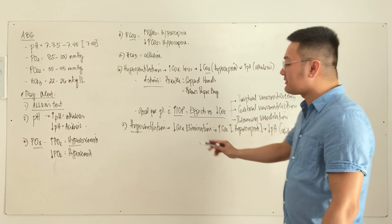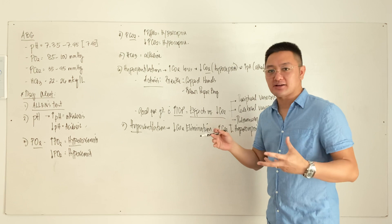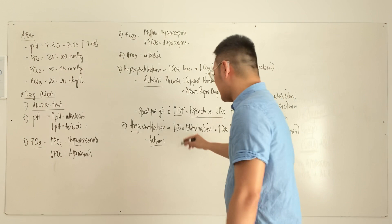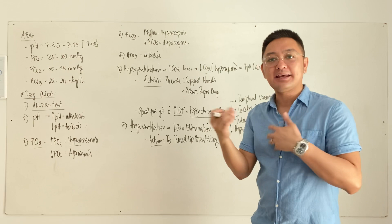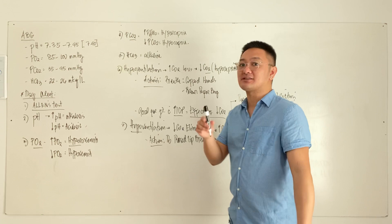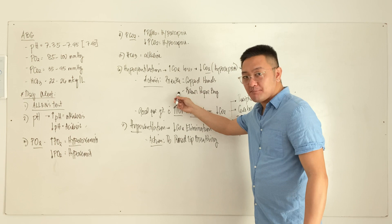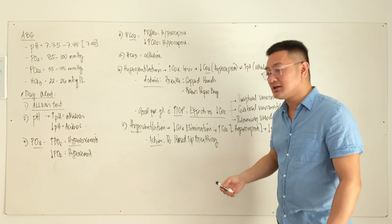If a patient hypoventilates, do not instruct them to breathe into cup hands or a brown paper bag — that would further increase CO2 level. Instead, the action is directed toward promoting CO2 elimination. Instruct the patient to perform pursed-lip breathing. In pursed-lip breathing — like blowing a candle — exhalation is longer, promoting carbon dioxide loss. The purpose of pursed-lip breathing is to promote CO2 loss, opposite to the cup-hands technique which restores CO2.